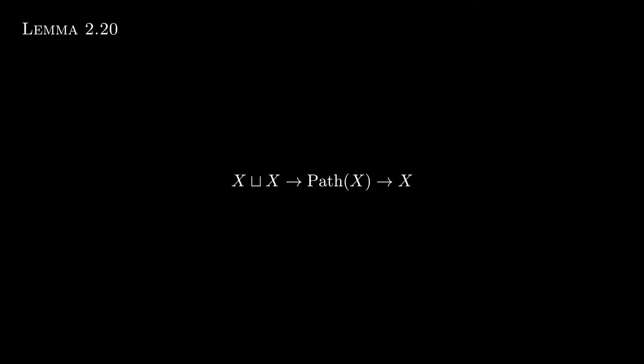To see that it is a fibration, consider this diagram. Since x is fibrant, the right morphism is a fibration, and since these are closed under pullbacks, it follows that the right and top morphisms are fibrations as well.